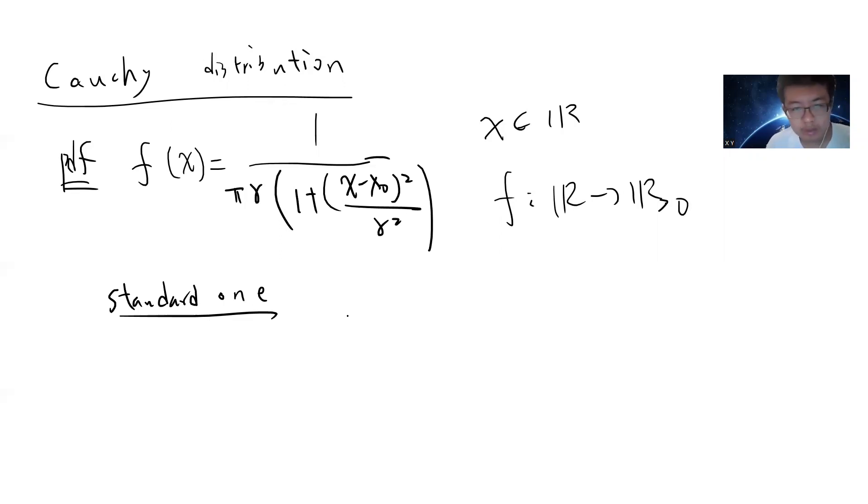The standard one, if you go to Wikipedia or write any code, the standard one is just 1 over π(1 + x²). So the standard one, we choose x₀ to be zero and γ to be one.